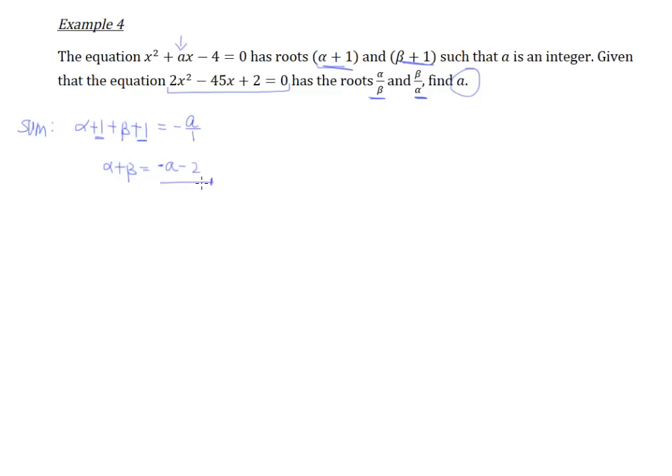Since there's a 1 + 1 and that gives us a positive 2 here, we're going to bring over to the right-hand side, it becomes -2. Let's take a look at what the product holds. So the product will be of course (α + 1) multiplied by (β + 1).